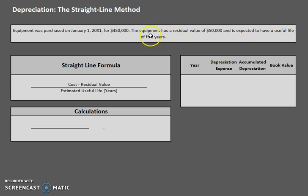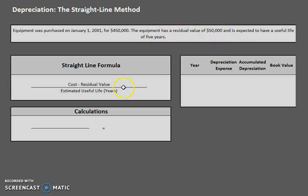Let's move on to the useful life of five years. We expect this equipment to be used for five years, so after five years we expect that we can sell this equipment for $50,000. Now for the straight line method, the great thing about it is that the first time you calculate it, it's going to be the same for each year's depreciation expense.